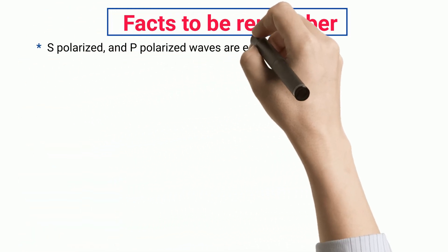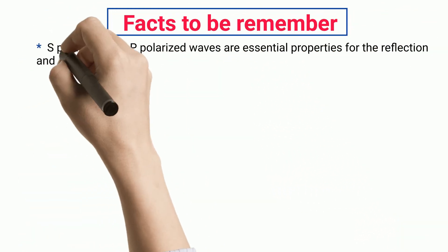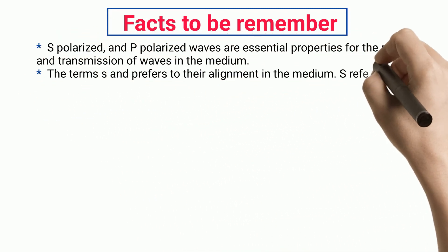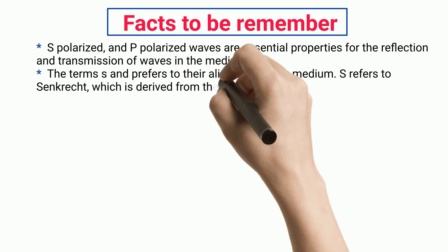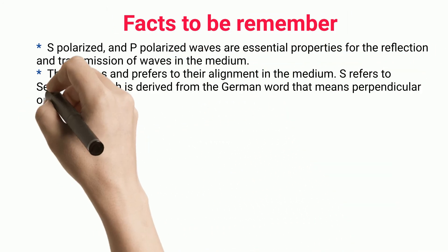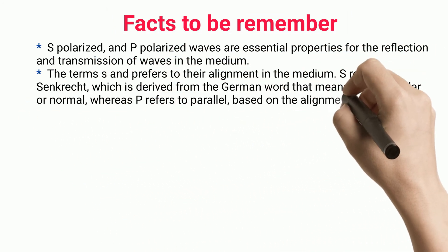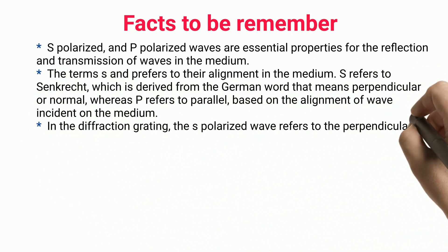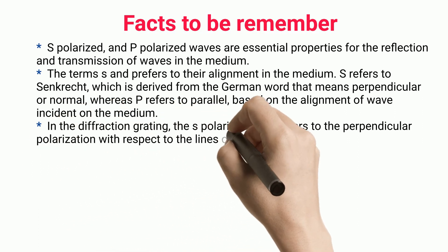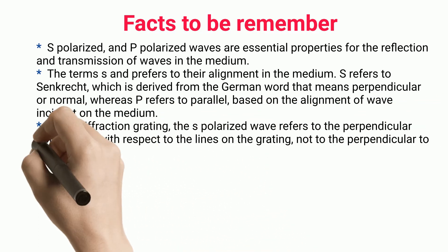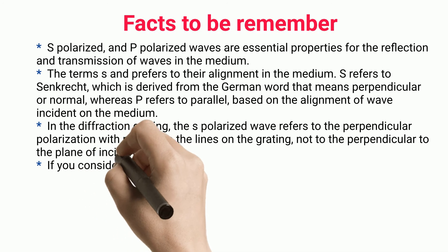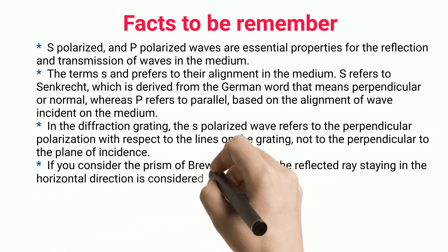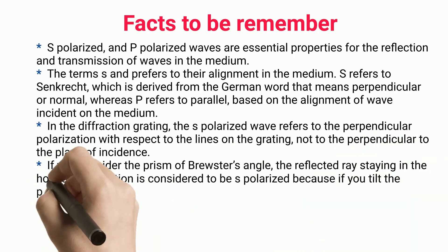S-Polarized and P-Polarized waves are essential properties for the reflection and transmission of waves in the medium. The terms S and P refer to their alignment in the medium. S refers to 'Senkrecht,' derived from the German word meaning perpendicular or normal, whereas P refers to parallel, based on the alignment of the wave incident on the medium. In the diffraction grating, the S-Polarized wave refers to perpendicular polarization with respect to the lines on the grating, not perpendicular to the plane of incidence.